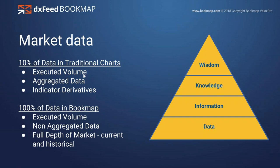You might have studies and indicators of volume, time, and price, but those are derivatives — calculations based on time, volume, and price. In the end, you're only consuming about 10% of the market data that's out there. What we show in Bookmap is 100% of the data. You're still getting all the executed volume, but we're showing you every single price event that took place, with full depth of market. Using DXFeed Bookmap, you're looking at the full depth — several dollars outside of current price as active layers.